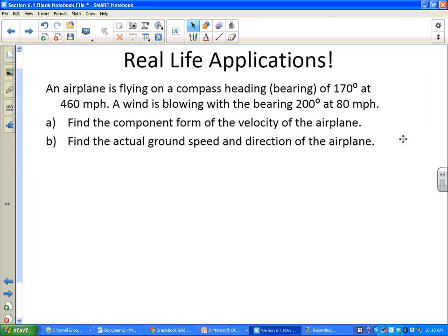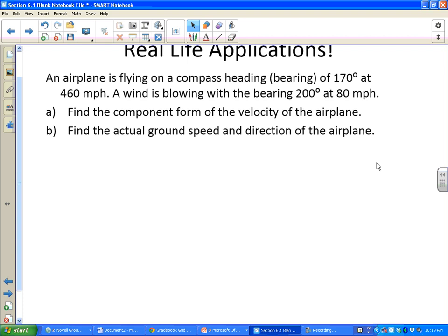Okay, second try at a vector-related word problem. An airplane is flying on a compass heading, also known as a bearing, of 170 degrees at 460 miles per hour. A wind is blowing with the bearing 200 degrees at 80 miles per hour. It wants us to find the component form of the velocity of the airplane, and also find the actual ground speed and direction of the airplane.